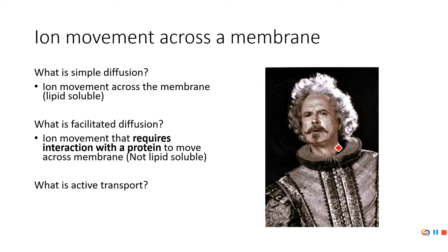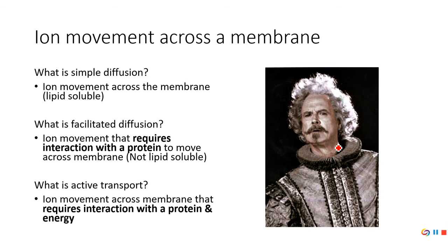Facilitated diffusion, on the other hand, is when an ion needs a protein — in other words, it needs a door. These are ions that aren't lipid soluble, meaning they can't dissolve in fat. The reason they need to dissolve in fat is that your cell membrane is essentially a layer of fat. So ions that aren't lipid soluble, such as potassium, need a door. If there is no door, they can't get in or get out. Active transport requires a pump — a pump is different from a door.